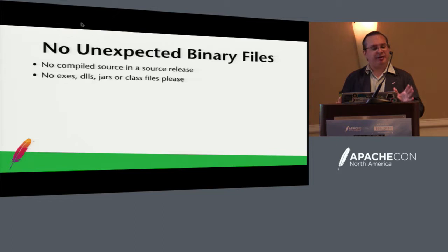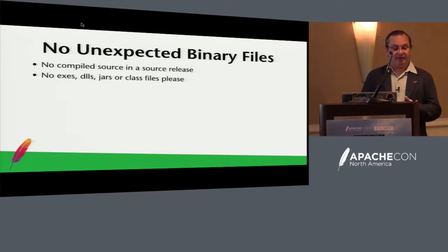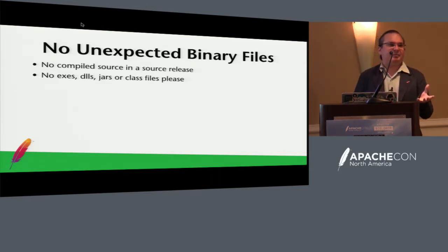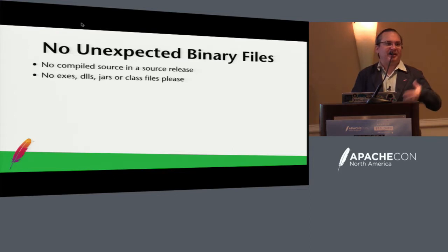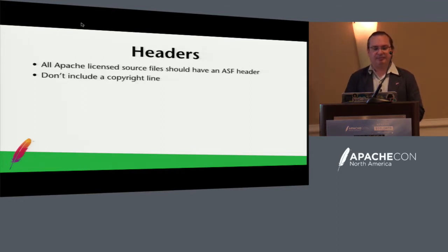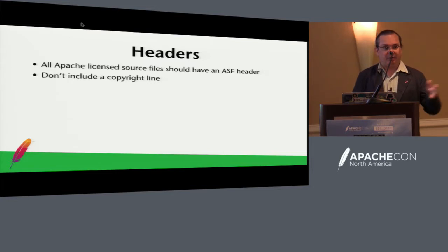We don't want any unexpected binary files in the source release: no executables, DLLs, jars, or class files. You can include images, fonts, and stuff that is binary, but not compiled source code. There are a few exceptions — I've seen releases pass that have fake jars for a test where the jar is actually empty. But often there's a way around this: just compile the code into the jar as part of the test anyway. This is generally the number one reason releases get voted minus one. All source files must have an ASF header. Be careful because the ASF header has changed from version 1.1 to 2.0, and you should not have a copyright line in an ASF header.